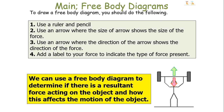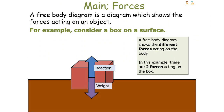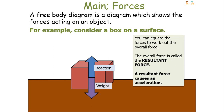The four rules for free body diagrams are: use a ruler and pencil to draw your diagram; use an arrow where the size shows the size of the force; use an arrow where the direction shows the direction of the force; and add a label to indicate the type of force present. In this example, the free body diagram shows a box on a table with two different forces acting on it. You can equate the forces to work out the overall resultant force, and the resultant force causes acceleration.